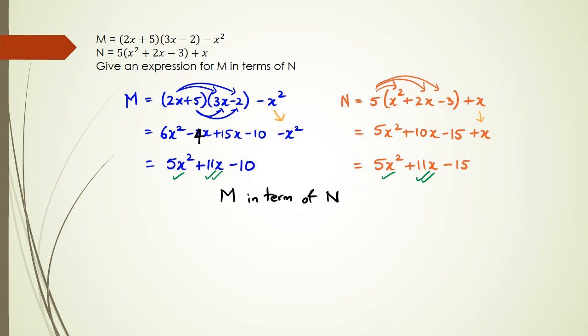So what I can do is, I'm going to rewrite N as like this. I'm going to rewrite it as 5x squared plus 11x, but instead of minus 15, I'm going to split it up as minus 10 minus 5. Because then what I've done is, I could actually say, now if I look at what M is, M is 5x squared plus 11x minus 10. So that is this blue part here. And here, what I've done is, I've actually split up N with M being inside it.